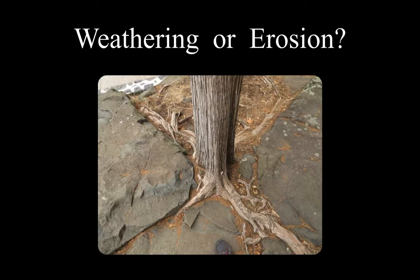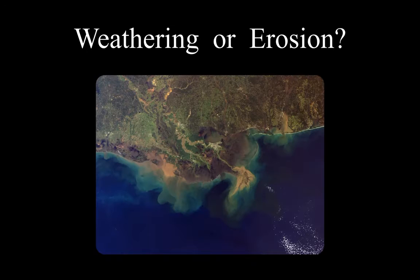Here's my question: is this weathering or erosion? What's happening here? Think about what's happening and look at the picture. Did you pick weathering? Plant roots — got it. Next picture: is this weathering or erosion? This is the Mississippi Delta, Louisiana. If you said erosion because it's carrying sediment out — you can see all the sediment being dumped out into the Gulf of Mexico — you're correct.